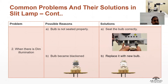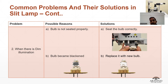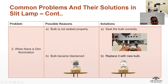The second problem is dim illumination. The possible reason is that the bulb is not seated properly in the bulb socket, which prevents proper light output and results in an unclear image. Check and reseat the bulb in the socket. Sometimes the bulb becomes blackened, in which case it cannot be repaired and must be replaced with a new bulb.